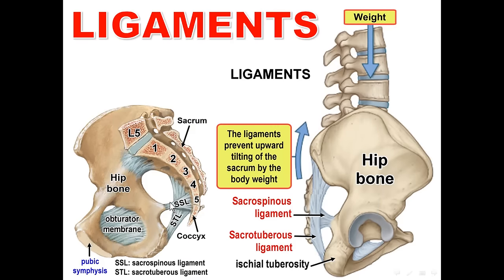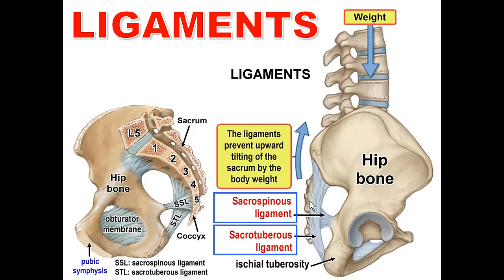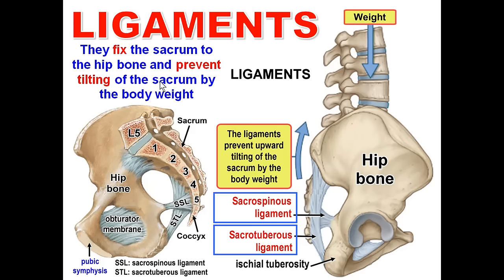The sacrotuberous ligament and sacrospinous ligament are very important because they fix the sacrum to the hip bone and prevent tilting of the sacrum by the effect of body weight.